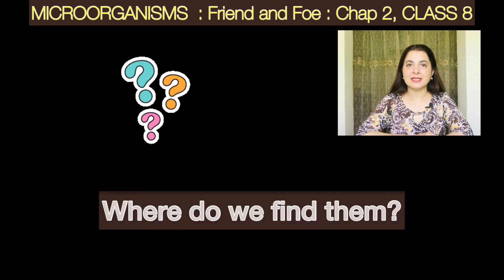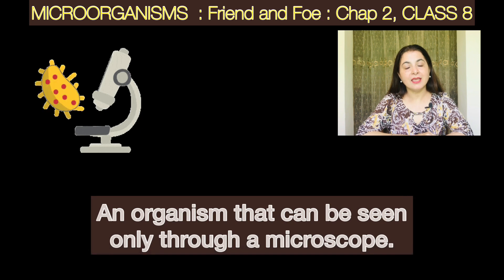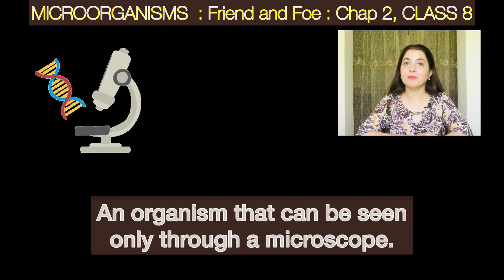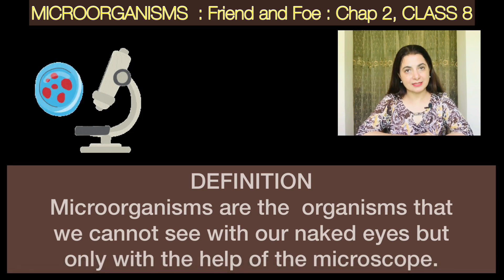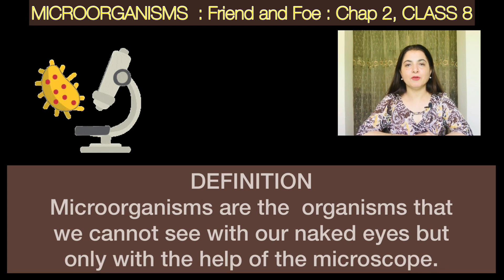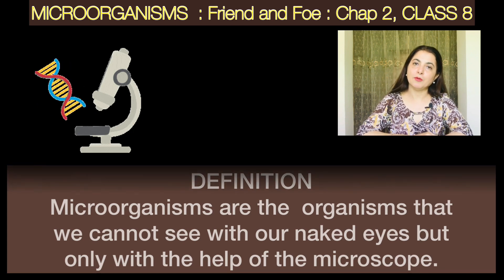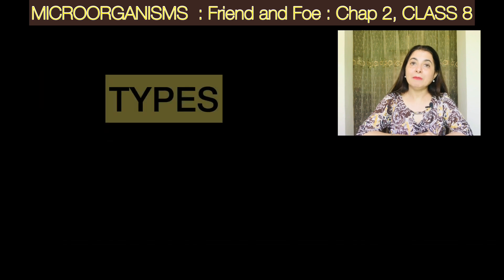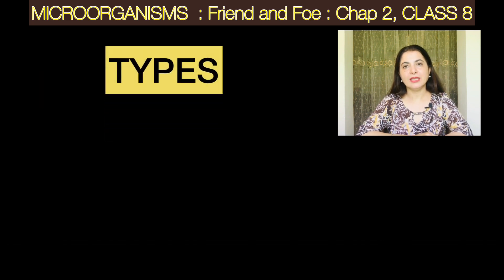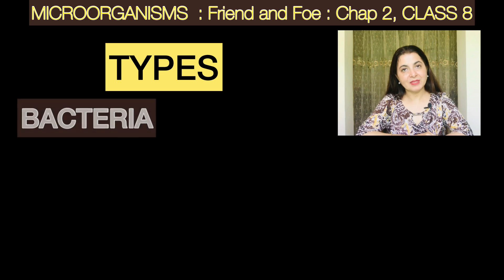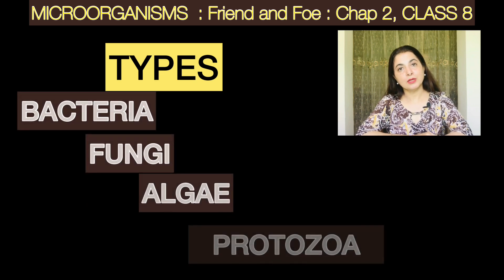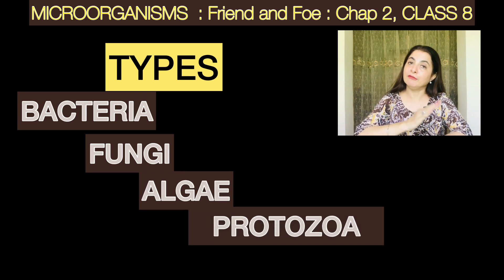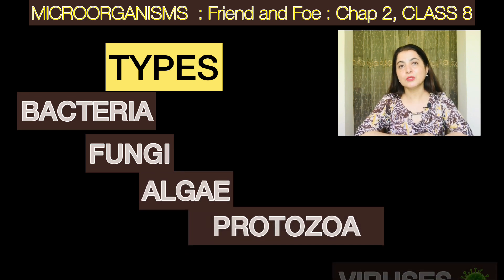Microorganisms are the organisms which we can see only with the help of a microscope and not with the naked eye. Their types include bacteria, fungi, protozoa, and one other which is on the borderline of the living and the non-living, which we call viruses.